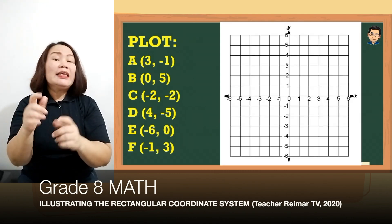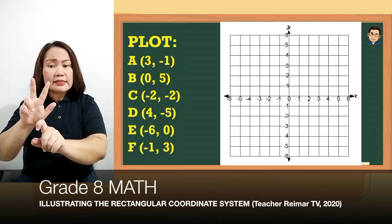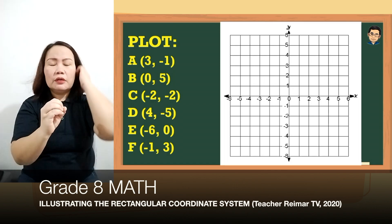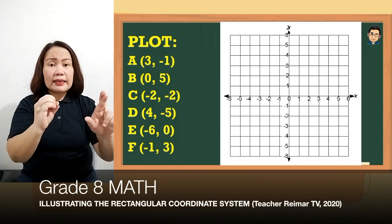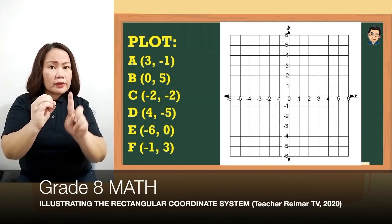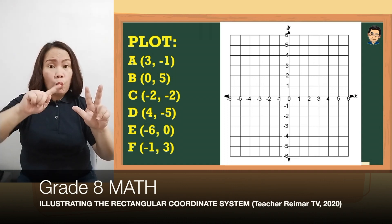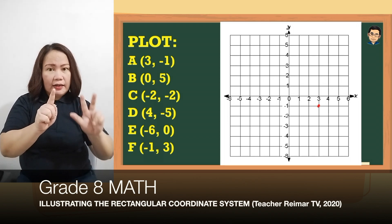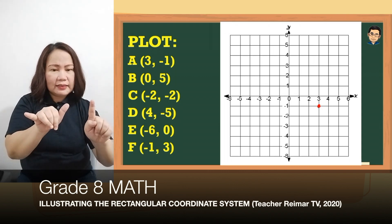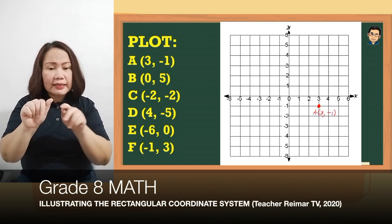Plot point A with coordinates (3, -1). We start sa pinakagitna, then we move 3 steps to the right kasi positive yung 3. And then, negative 1 — dahil negative, mag-move tayo ng isa pababa. So nandito yung (3, -1), nakatapat na sila pareho. So name natin siya as A (3, -1).